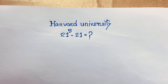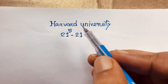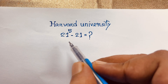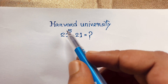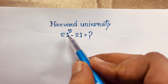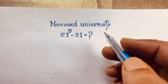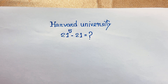Hello everyone, welcome to Rasha's Classroom. Today we are solving an interesting math Olympiad question without a calculator, which is 21 to the power 5 minus 21 is equal to what? How to solve this interesting math problem without a calculator?